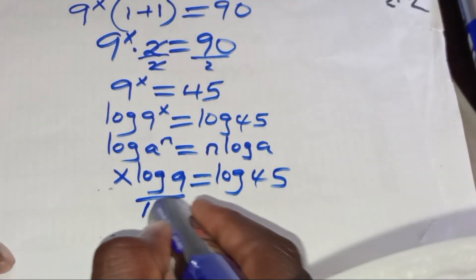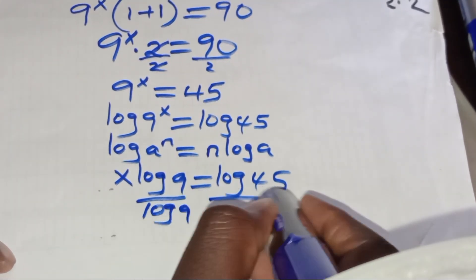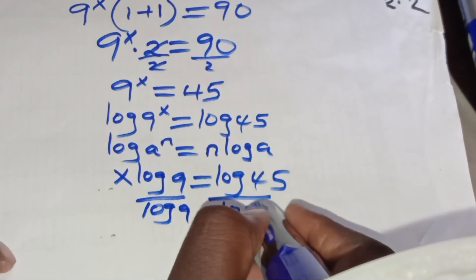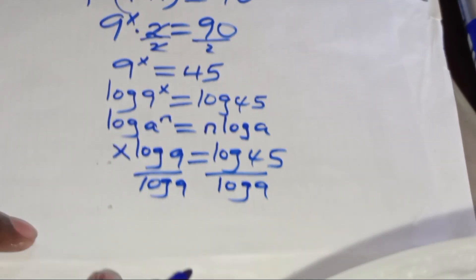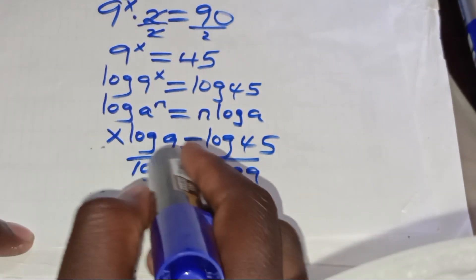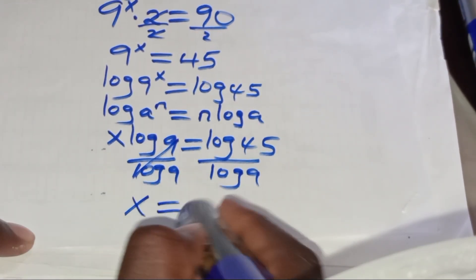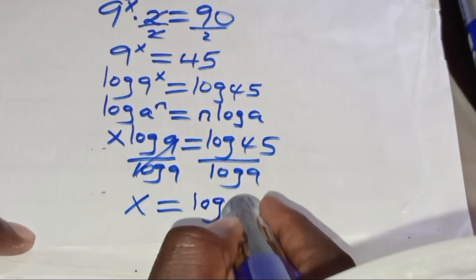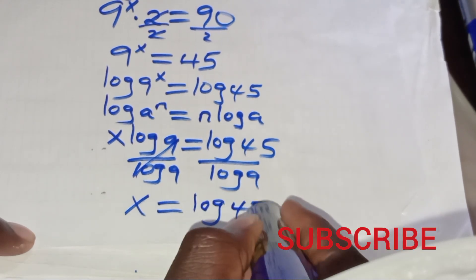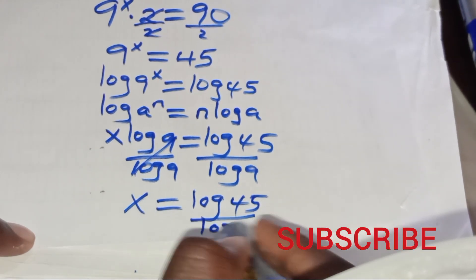We divide both sides by log 9, so that means the value of x is equal to log 45 divided by log 9.